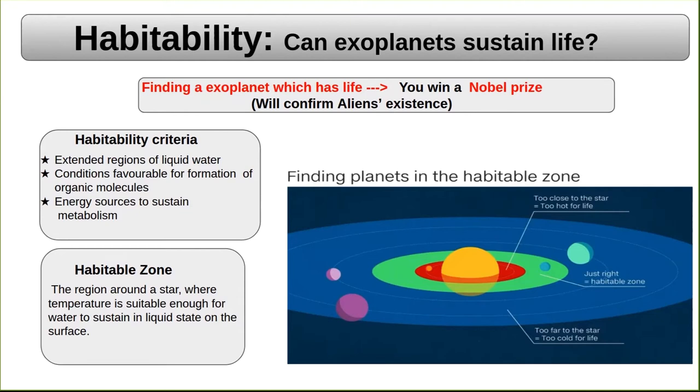We know that suitable conditions are required for formation of organic molecules. There need to be energy sources to sustain the metabolism. If all these conditions are met in a region, we call those regions as habitable zones. And if you can find a planet in habitable zone, then there is a possibility of alien life. And if you can find a planet which has alien life, then certainly a Nobel Prize is waiting for you.